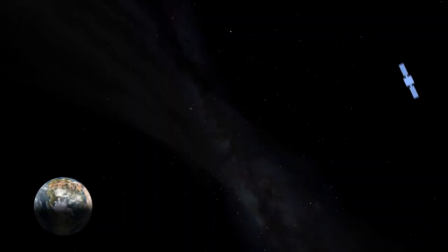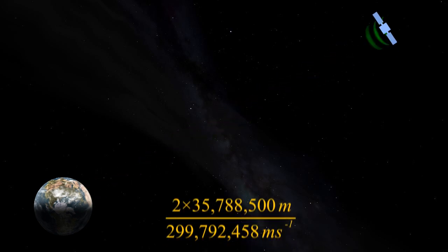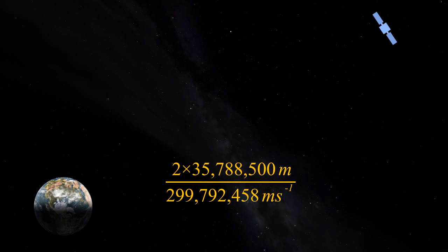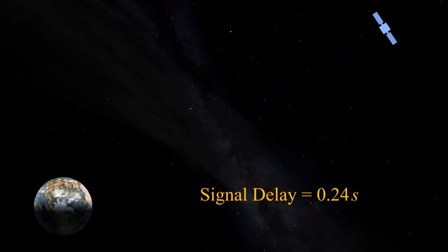A signal to and from the satellite will travel over 71,500 km. Divide the distance by the speed of light, and we get a figure of 0.24 seconds. The orbital distance is why communications via such satellites introduce a quarter-second delay at the equator, and longer at higher latitudes.